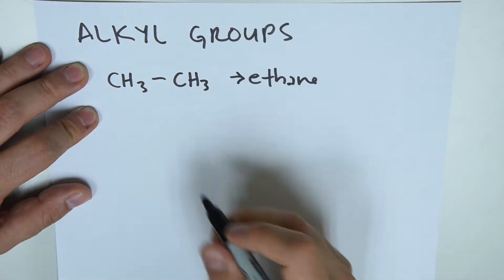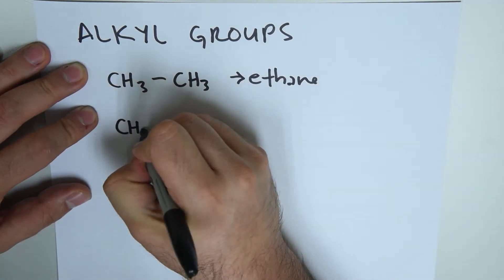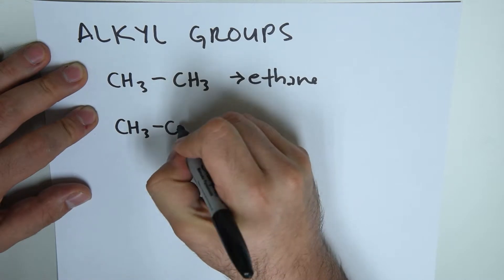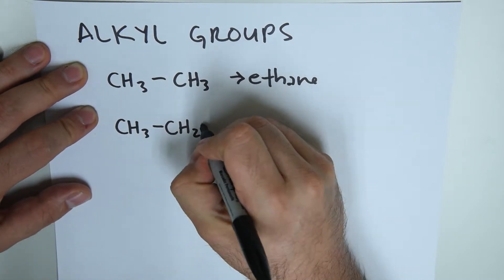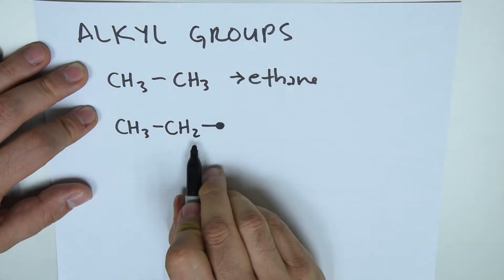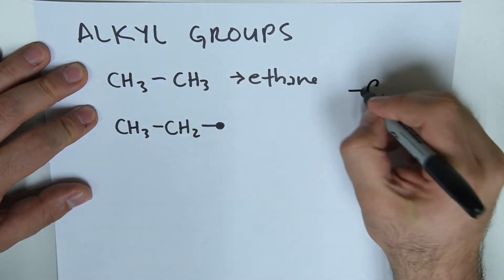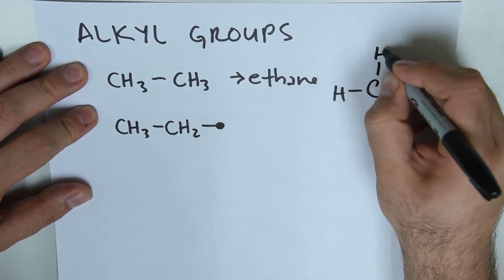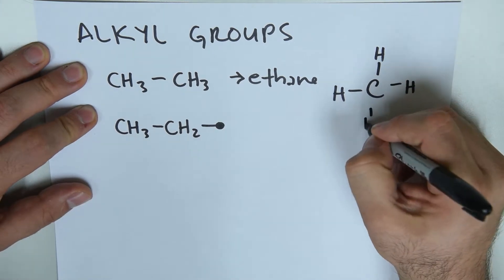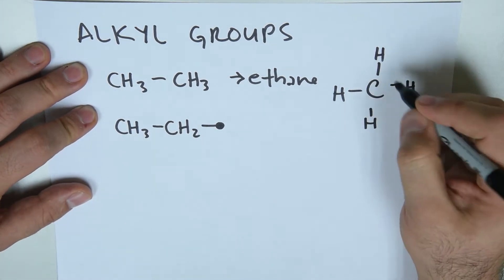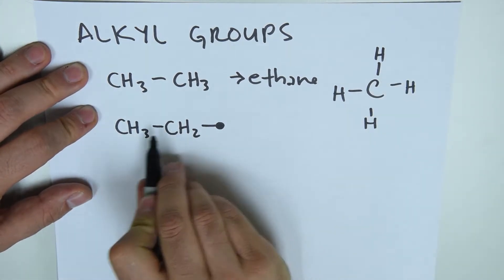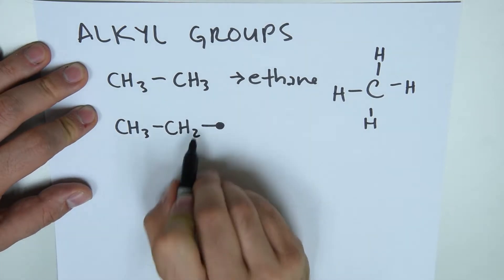However, when we remove one of the hydrogens, this molecule, this piece of molecule or chain radical, is going to want to bond to something else. Remember, carbon can only make four single bonds or a combination with double bonds, etc., but it can only make four bonds in total. Here carbon is bonding to this carbon and to two hydrogens, therefore it's missing one.